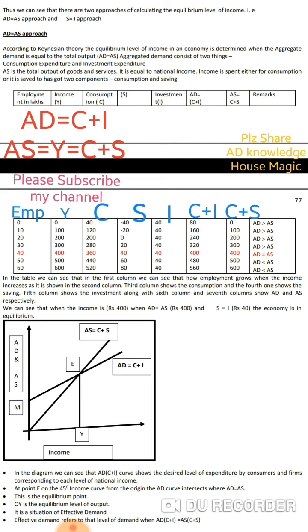Now let's talk about the equilibrium level of income. We have a schedule with the following columns: first, employment; second, income; third, consumption expenditure (C); fourth, saving; fifth, investment (I); next, C plus I which is AD; and finally, C plus S which is AS.